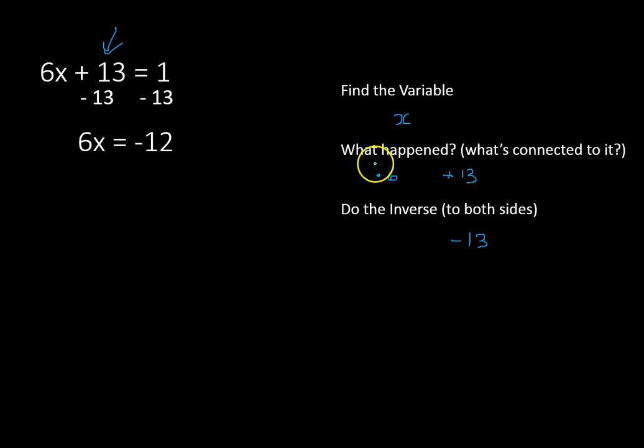Now we're going to take care of the 6 that is connected to our x. Notice how close that one is. We're multiplying 6 times x. To undo that, we'll divide both sides by 6. 6 divided by 6 is 1. They cancel each other out, and you're left with x on the left side of the equation.